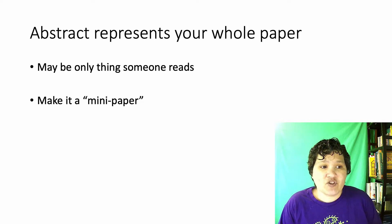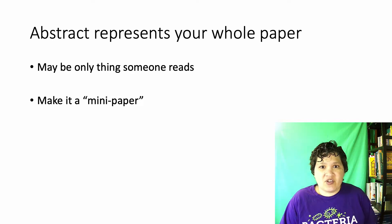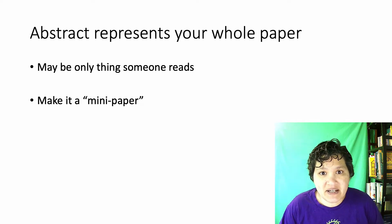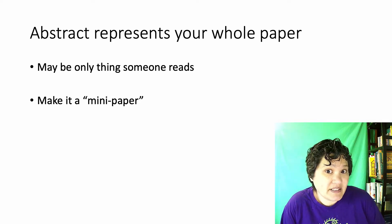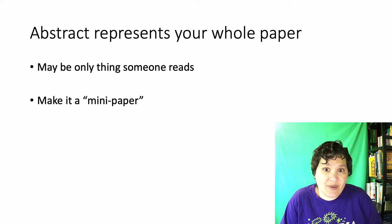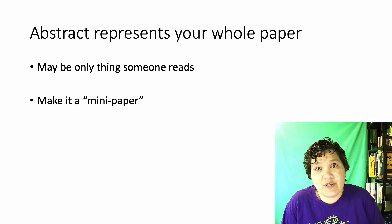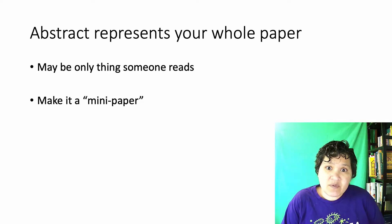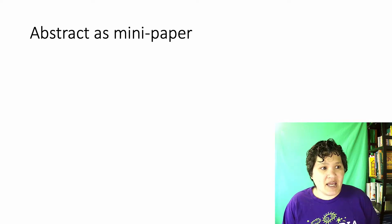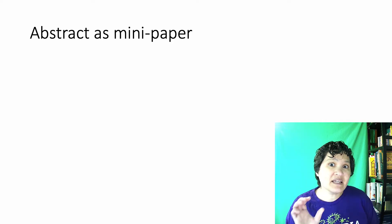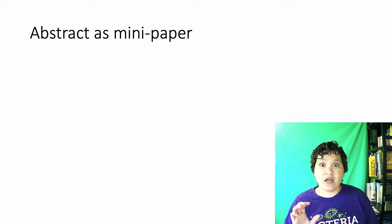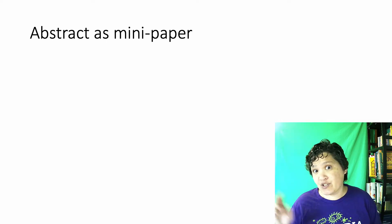Think of an abstract as a mini paper — it is your paper shrunk down to a one-paragraph size. A scientific paper has four basic sections: you have your introduction, you have your methods, you have your results section, and you have your discussion section. Your abstract should have the same. What you're going to do is write your abstract by taking a sentence or two or three from each of those sections of your paper.